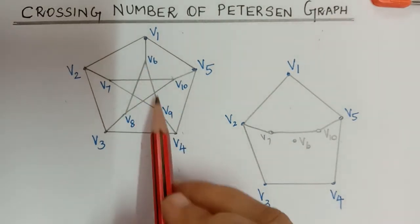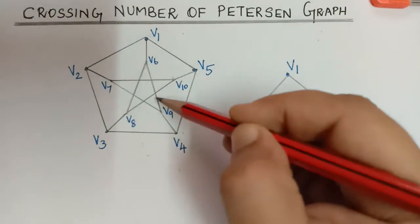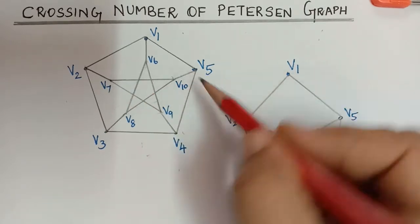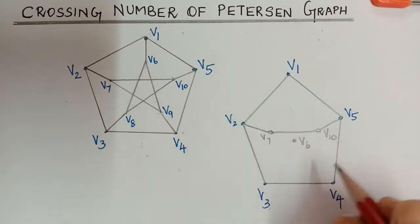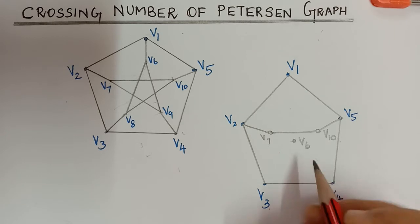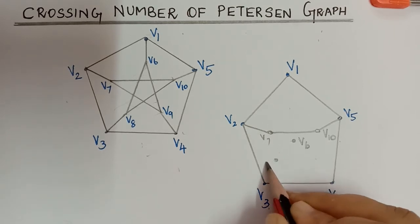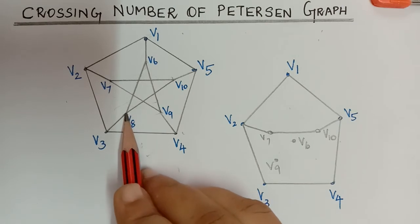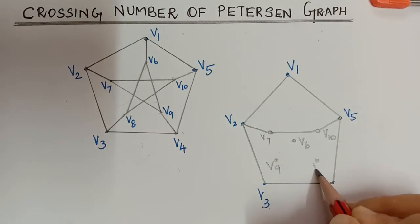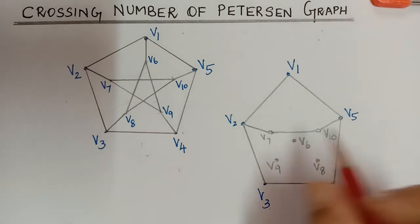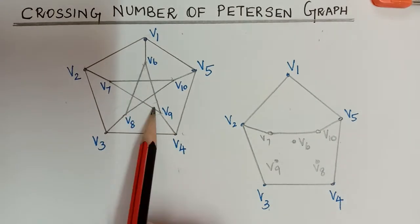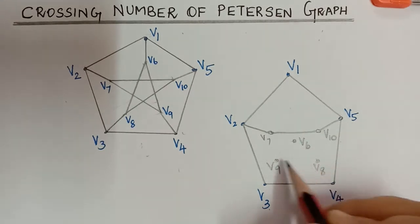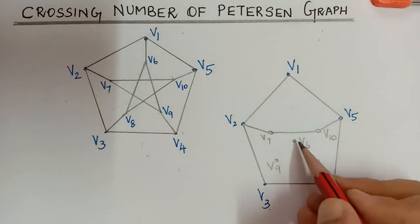When we move v6 to this new position, we see that both v6 and v7 have an edge with v9 — that is, edges v6-v9 and v7-v9. So we can also replace vertex v9: instead of keeping v9 in its original position, we move it to a new position. Similarly, vertex v8 is moved from its original position to a new position.